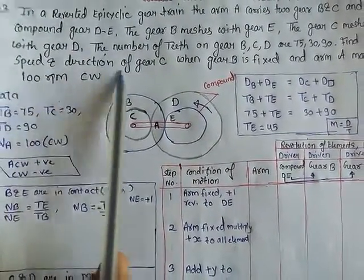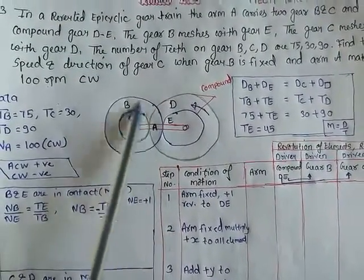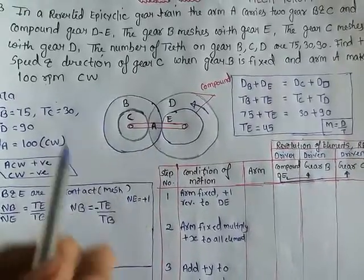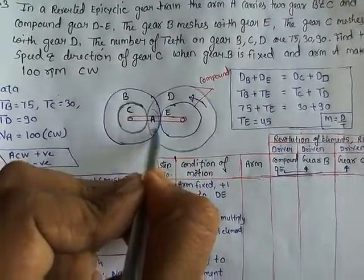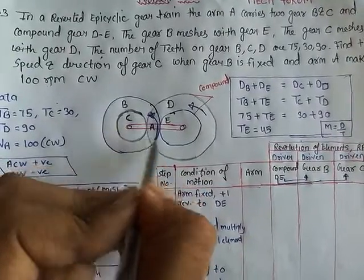Find the speed and direction of gear C. We have to find gear C's speed and direction when gear B is fixed and the arm will be 100 RPM in the clockwise direction.